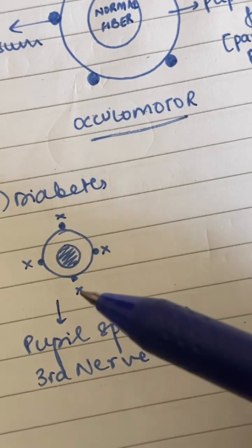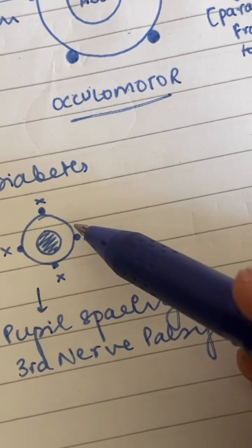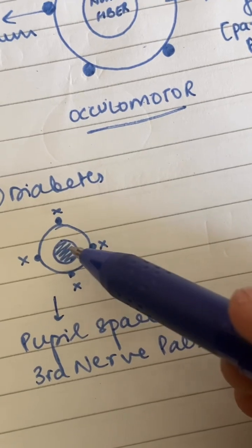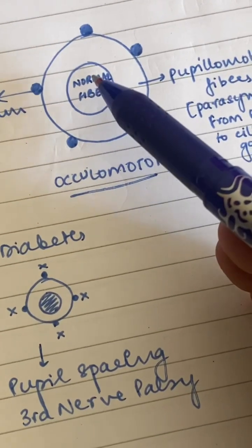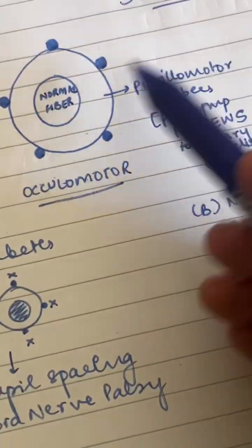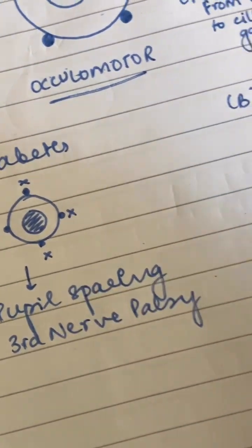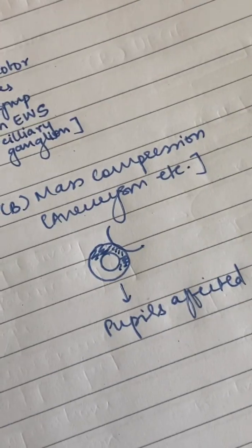neuropathy, because your nerve is not getting enough blood supply. Now, when the blood supply is cut off from the periphery, the most affected zone is going to be the center, which means the normal fibers are more affected than the pupillomotor fibers. That is why it causes a pupil sparing third nerve palsy. Now coming to a mass compression